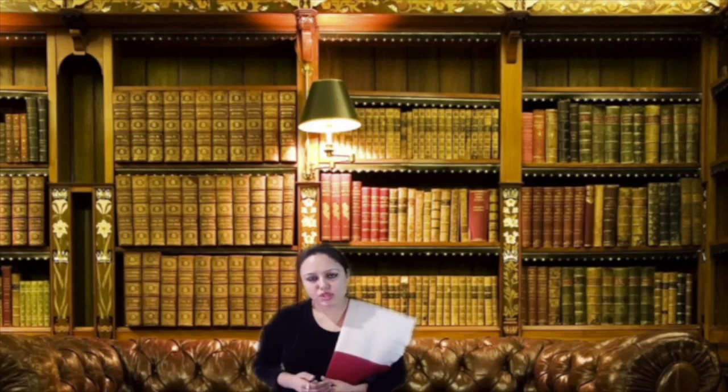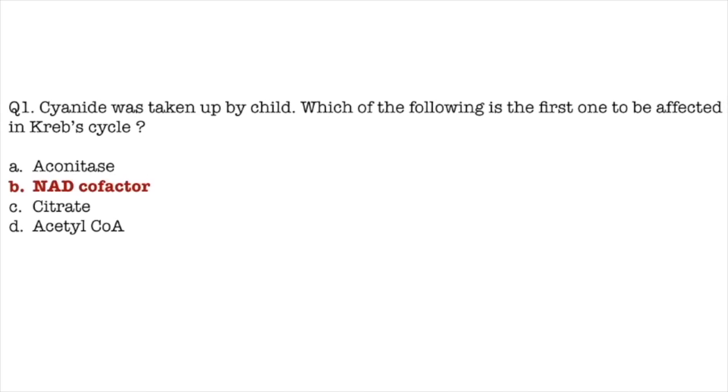So now let's see the question again. First option is aconitase. This is enzyme of TCA cycle. It is not affected in cyanide poisoning. Second option, NADH cofactor. That is the answer to this question. Third option is citrate, which is intermediate of TCA cycle, which is actually increased. And fourth option, that is acetyl-CoA. Acetyl-CoA production also decreases.